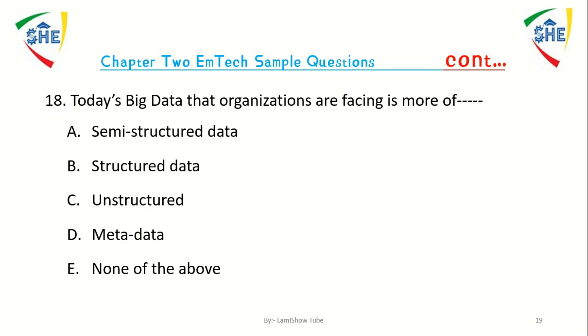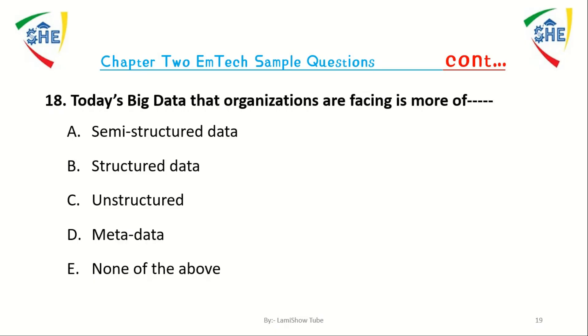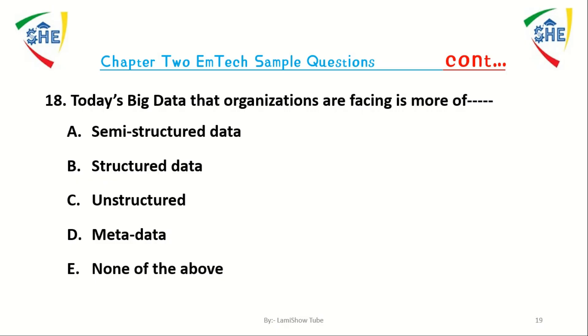Question number 18: In today's big data that organizations are facing, the data is more of dash. A) Unstructured data, B) Structured data, C) Semi-structured data, D) Metadata, E) None of the above.